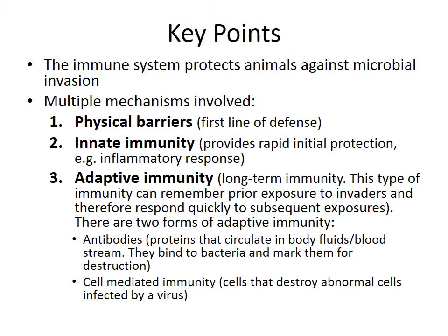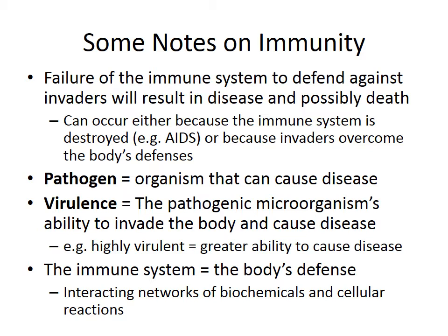There are two forms of adaptive immunity. One involves antibodies — proteins that circulate in the body fluids and bloodstream. They bind to bacteria and other pathogens, marking them for destruction. There's also cell-mediated immunity, which involves cells that destroy abnormal cells — cells infected by a virus or bacteria.